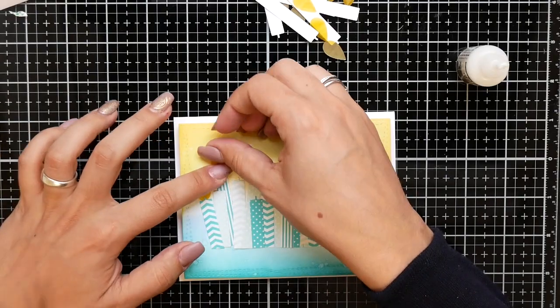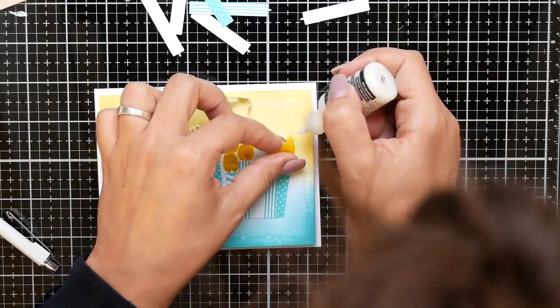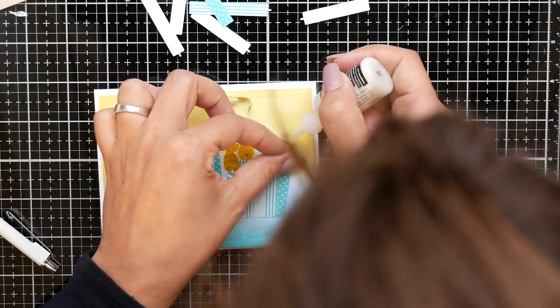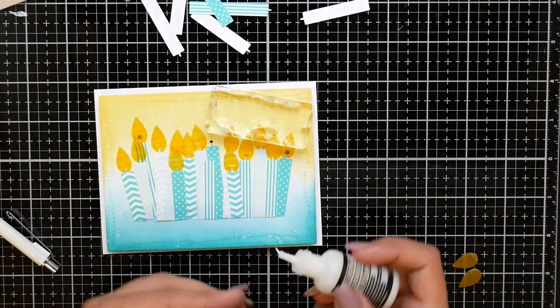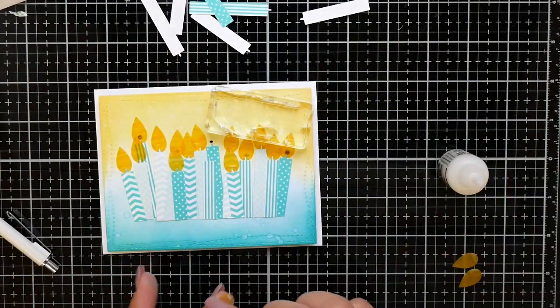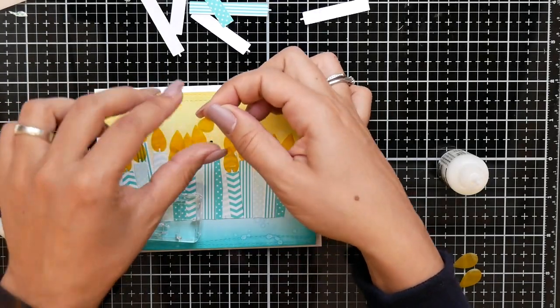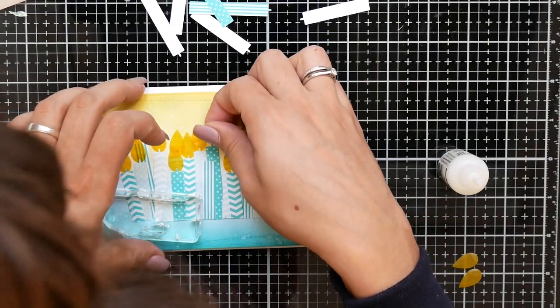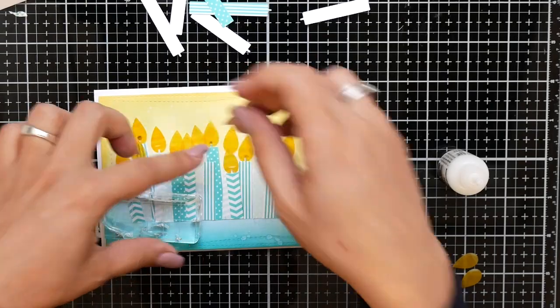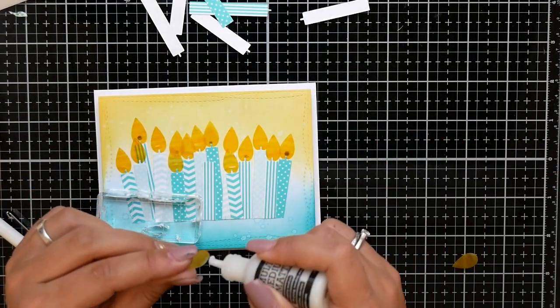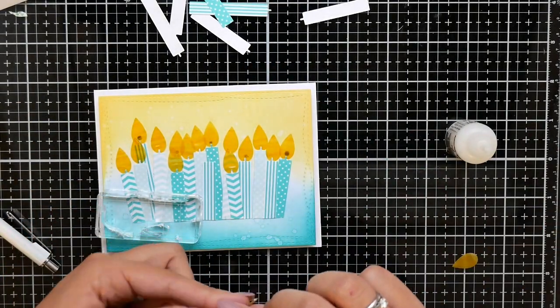Now I'm adhering the fire to the candle. It took me quite a while. I'm using Multi Matte Medium because in my opinion it's good to glue vellum since you won't see it as it dries matte.